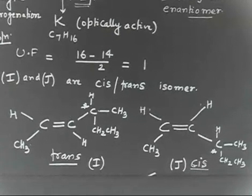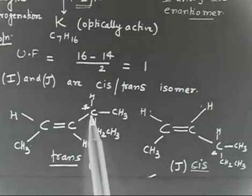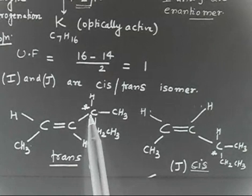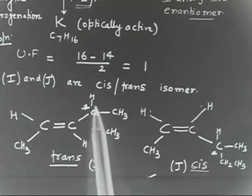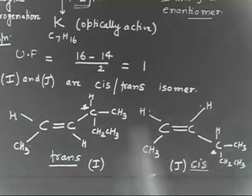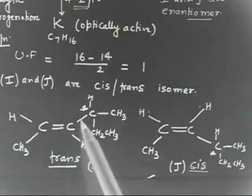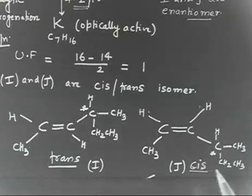Both are optically active and both will show optical rotation in the same direction, because I am not changing the orientation of the chiral center. The rows and substituents around it are in the same configuration. I am only changing the position of the group across the double bond — on one side or the other. So both will have the same rotation, both will have positive rotation.